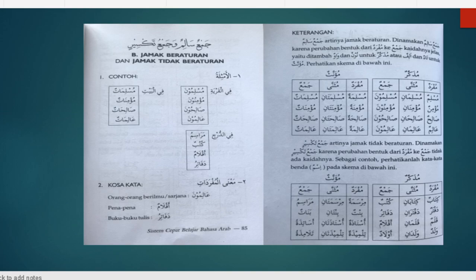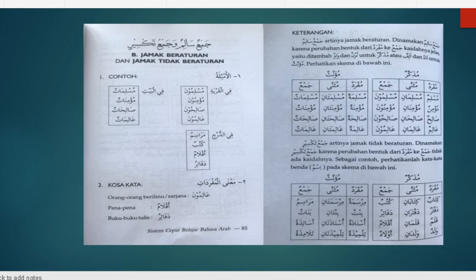Kali ini kita akan membahas tentang jama'. Pada kesempatan yang lalu sudah dibahas sedikit tentang jama', yaitu jama' yang beraturan dan jama' yang tidak beraturan. Jama' yang beraturan disebut dengan Jama' Mudzakkar Salim dan Jama' Mu'annas Salim. Disebut beraturan karena dia punya kaidah atau pattern atau rumus untuk kita dengan mudah mengenal bahwasannya dia itu Jama' Mudzakkar Salim ataupun Jama' Mu'annas Salim.